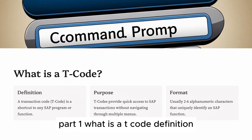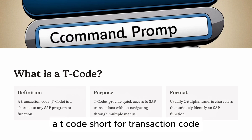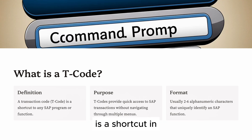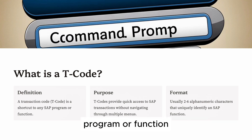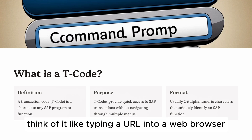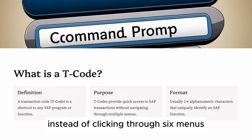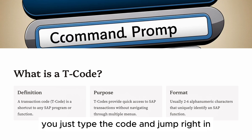Part 1: What is a T code? A T code, short for transaction code, is a shortcut in SAP that takes you directly to a specific screen, program, or function. Think of it like typing a URL into a web browser — instead of clicking through six menus, you just type the code and jump right in.